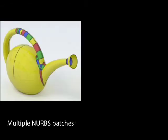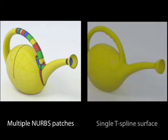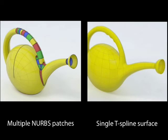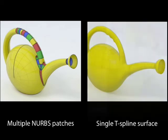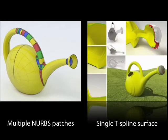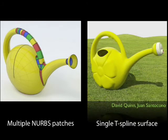Creating organic shapes with multiple NURBS patches can be tedious and difficult. T-Splines gives a smooth, watertight model that is editable at any time. This allows you to make many design iterations in T-Splines and be more responsive to your clients.